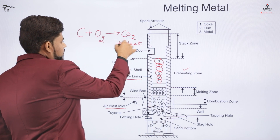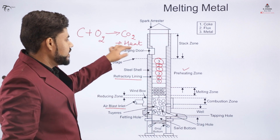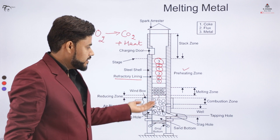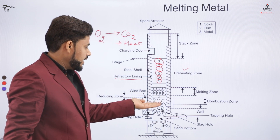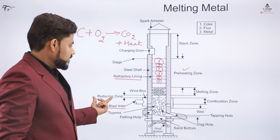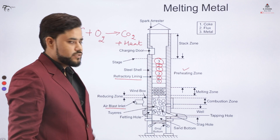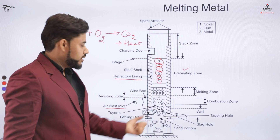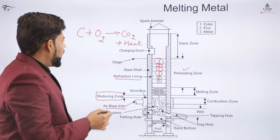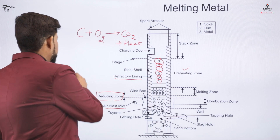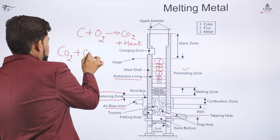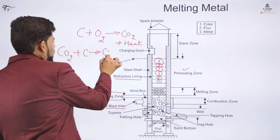As heat is released, this is an exothermic process, and heat is present inside the combustion zone. When this carbon dioxide rises above the combustion zone, it needs to be reduced by the carbon present in the form of coke. This creates the second zone — the reducing zone — where CO₂ reacts with carbon to form carbon monoxide (CO).